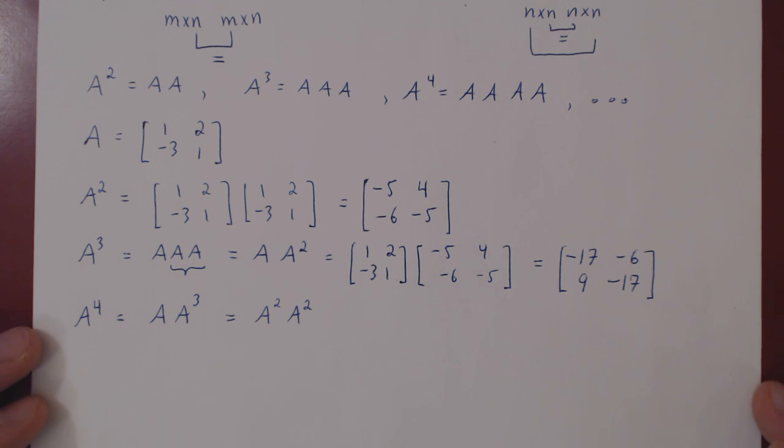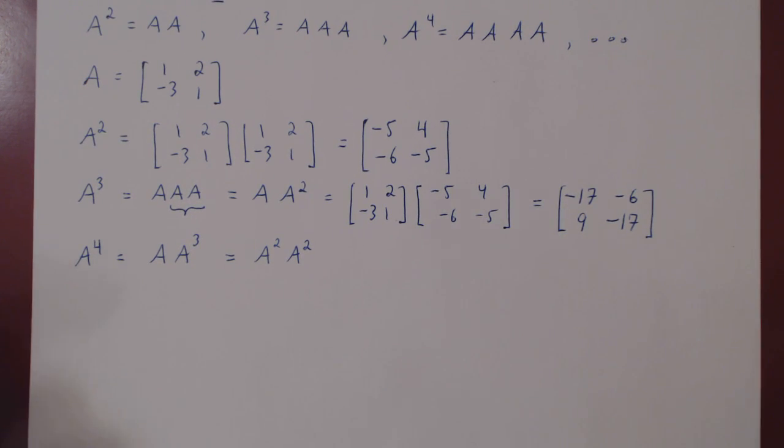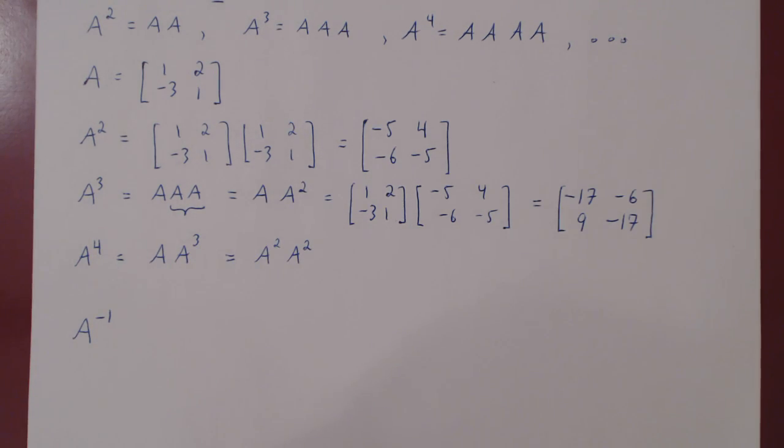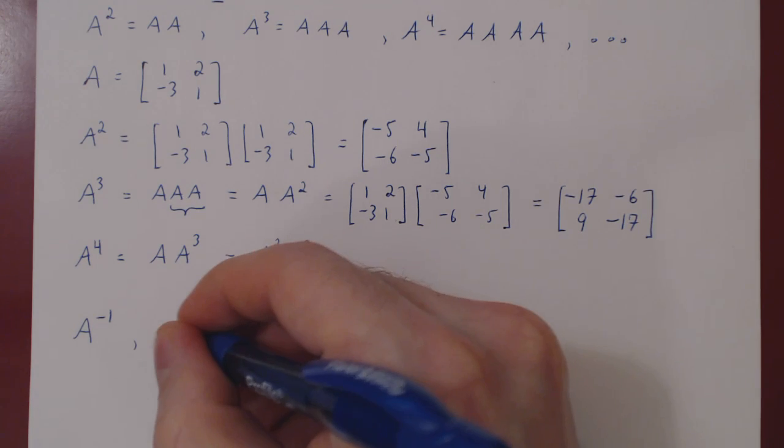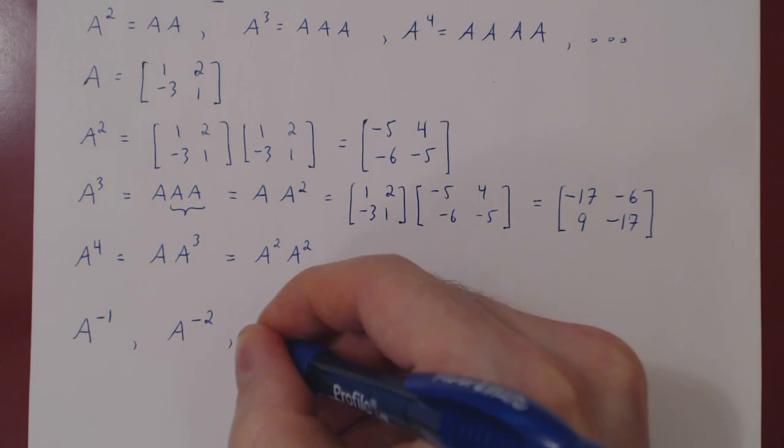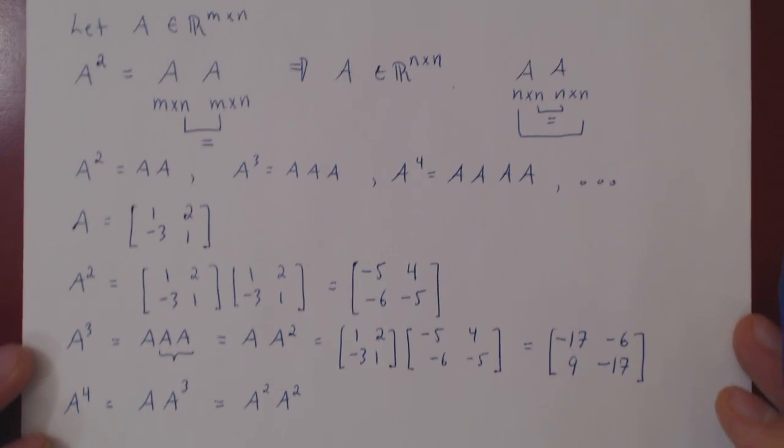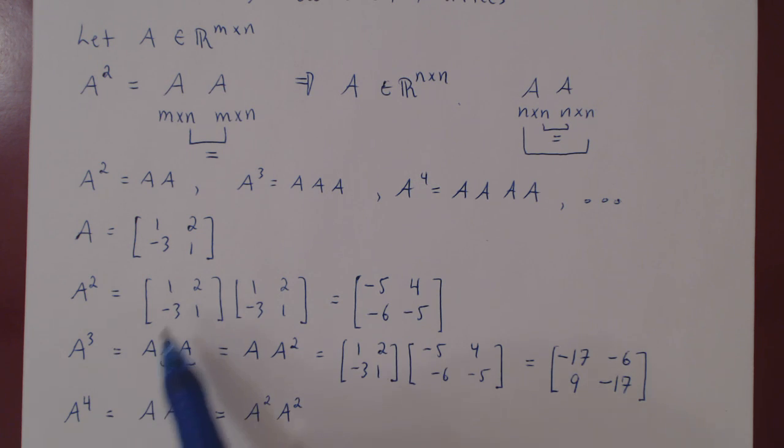You may ask, could we make sense, possibly, of a negative integer power of a matrix? What if we asked for something like A to the minus 1, or A to the minus 2, and so forth? And the answer is, we can sometimes make sense of negative integer powers of a matrix, that is a square matrix, but not always. This will be the discussion for future videos. For now, we will restrict ourselves to simply positive integer powers of matrices.